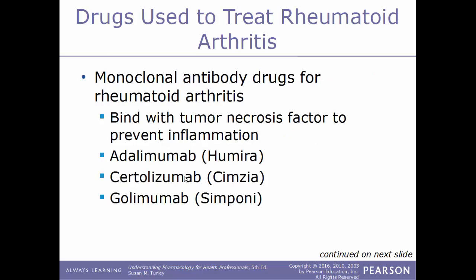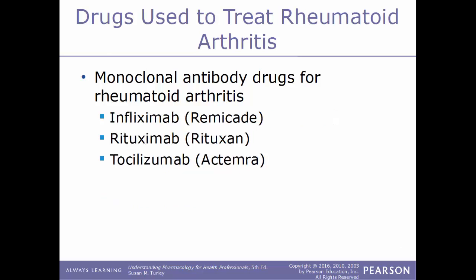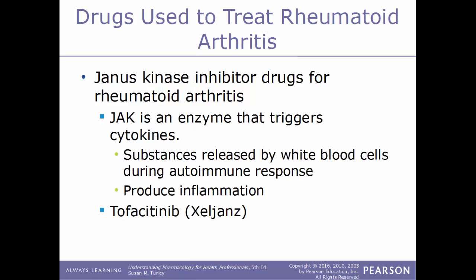Another type of drug used to treat RA are monoclonal antibody drugs, which bind with tumor necrosis factor to prevent inflammation. Examples include adalimumab better known as the trade name Humira, certolizumab better known as Cimzia, golimumab better known as Simponi, infliximab also known as Remicade, rituximab better known as Rituxan, and tocilizumab better known as Actemra.